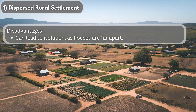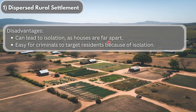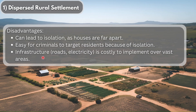The disadvantages of dispersed rural settlements include: it can lead to isolation as houses are far apart, and some social people will find no interaction, which leads to isolation. Isolation can also lead to crime, as it's easy for criminals to target residents — there are no witnesses and no one to stop them. The third disadvantage is that infrastructure such as roads and electricity is costly to implement over vast areas.